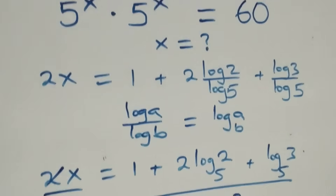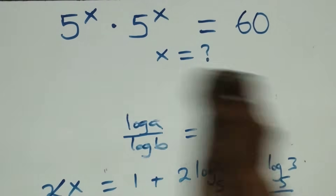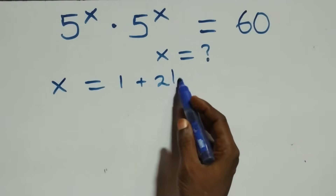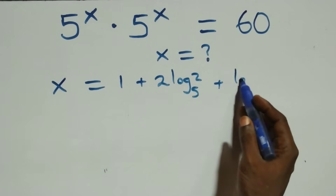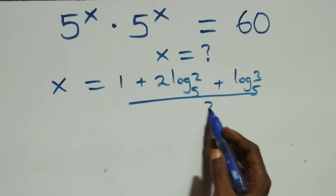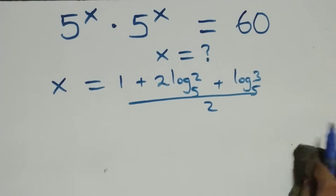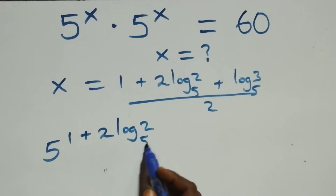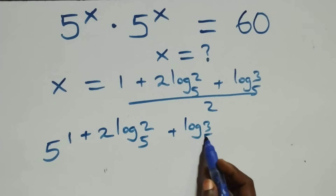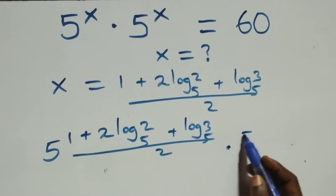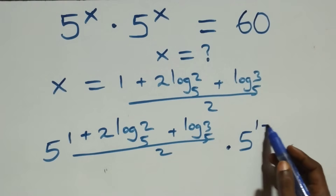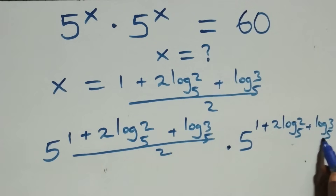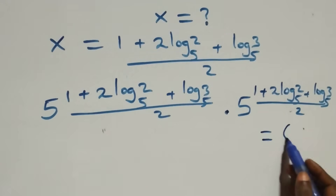Let's check whether this satisfies the given problem. We substitute the value of x, which is (1 plus 2·log₅2 plus log₅3) all over 2. So we have 5 raised to the power [(1 plus 2·log₅2 plus log₅3)/2] times 5 raised to the power [(1 plus 2·log₅2 plus log₅3)/2] — is this equal to 60?